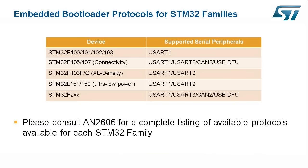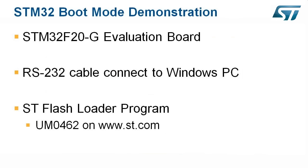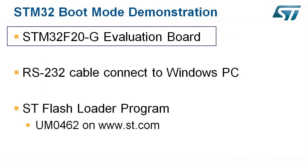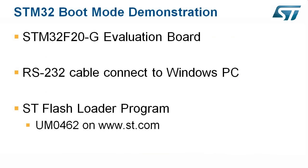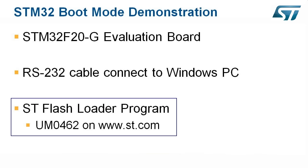I will now demonstrate using the system memory boot mode to load a flash image into the STM32. This demonstration uses an STM32 F207G evaluation board, an RS-232 cable connected to USART1, and a Windows PC using a USB to RS-232 serial converter. The program I use to flash the STM32 is called the ST Flash Loader Program, which can be found on the STM website labeled under User Manual 0462.